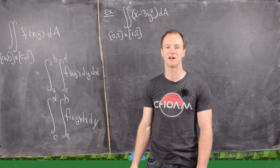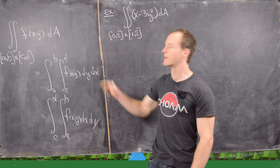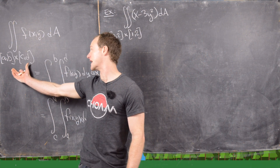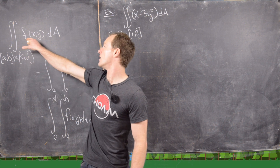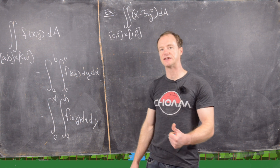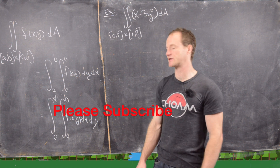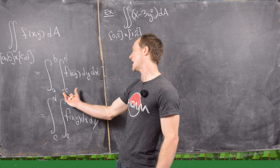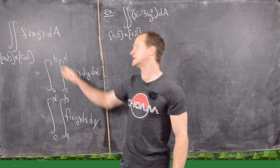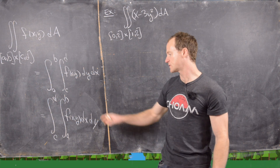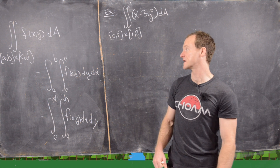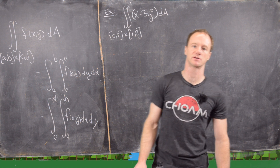In a previous video we introduced the notion of a double integral. We have this double integral over a rectangle in the plane of a function of two variables, and dA can be calculated two different ways with iterated integrals. We can put the y integral from c to d on the inside and the x integral from a to b on the outside, or the reverse. In this video we're going to do about four examples of calculating this type of double integral.